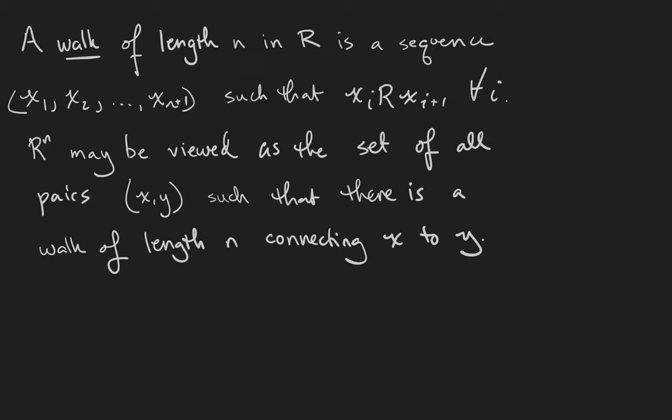So for example, x1 is related to x2, x2 is related to x3, and so on. Here's a picture of a walk of length 3 in a relation.